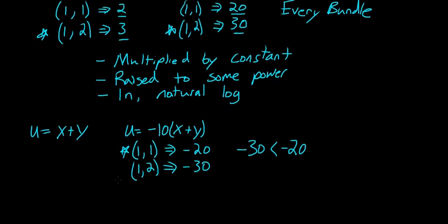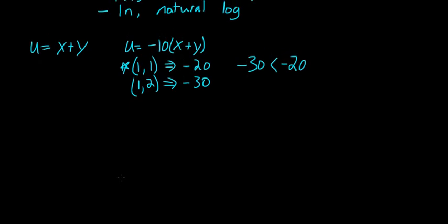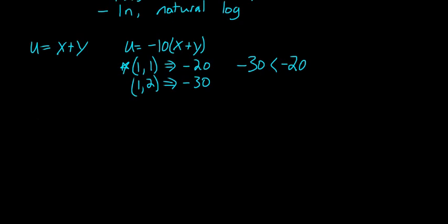Another example of a bad transformation that you should be able to tell because the preferences change is: what if I had a utility function that was very simple, u = x. I was just as happy as however many x I got. If I raised it to a power of negative 1, then this would be equal to 1 over x.